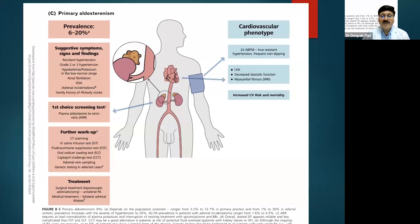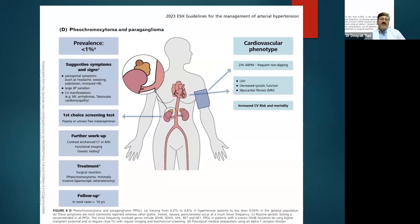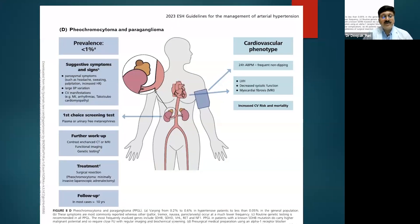For pheochromocytoma and paraganglioma, adrenalectomy and adequate blood pressure control are key. Patients may have paroxysmal symptoms — paroxysmal headache, sweating, palpitation, and sudden increases in blood pressure with large variations. Cardiovascular manifestations include arrhythmias, Takotsubo cardiomyopathy, and myocardial infarction. Diagnosis requires plasma or urinary metanephrines, and CT or MRI to locate the tumor. Treatment is surgical resection with adequate hypertension control.